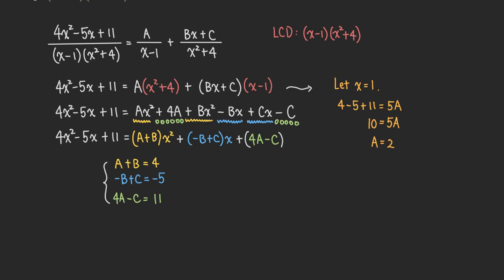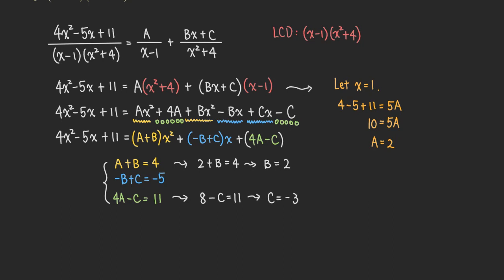So A is equal to 2. Now once we figure out A equals 2, we can plug it into the equations. For the first equation, 2 plus B equals 4, so B equals 2 — that's really quick. And then plugging A into the third equation gives 4 times 2, which is 8, minus C equals 11. So C is equal to negative 3. So now we have A equals 2, B equals 2, and C equals negative 3.